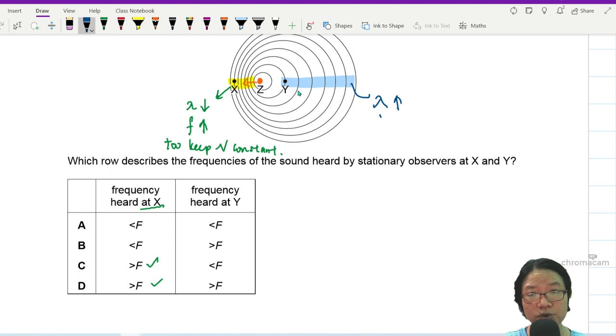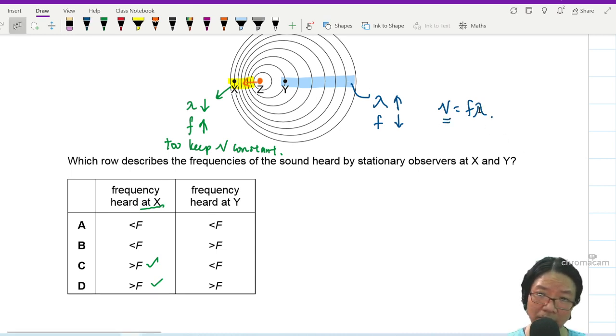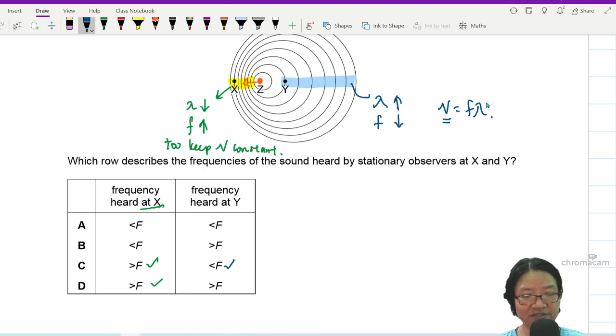So if lambda is greater, your frequency will decrease for the same reason. v equal to f lambda. You want v to stay the same. So if this value of lambda become big, this f should become small. So that when you multiply them, you still get the same value. So frequency would be smaller, less than f.